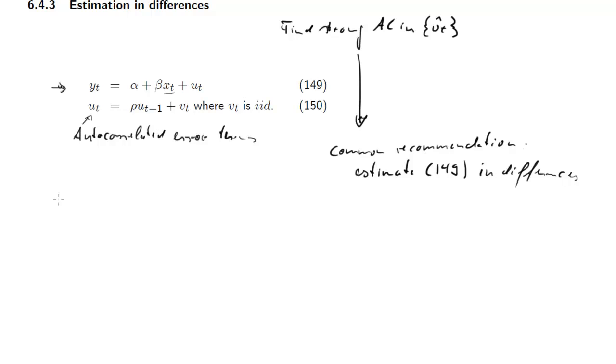And that means what we mean with differences is that instead of yt and xt we estimate a model in delta yt, so the change in yt, and delta xt, the change in the explanatory variables.